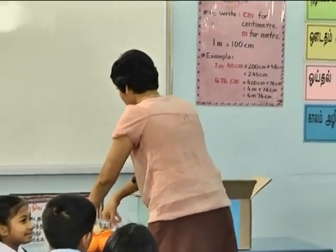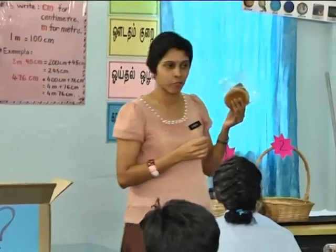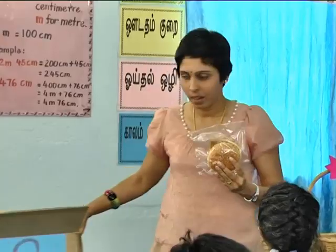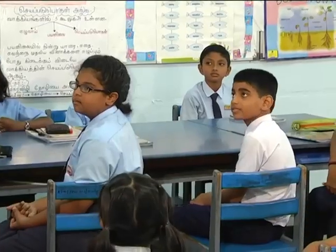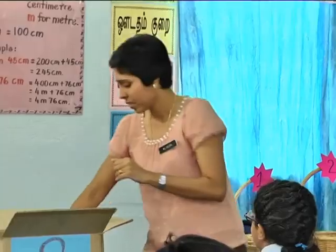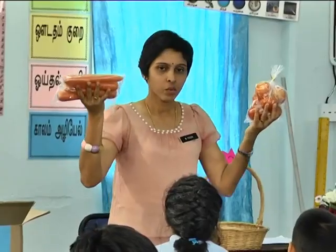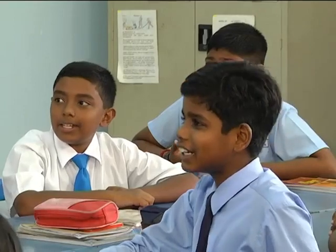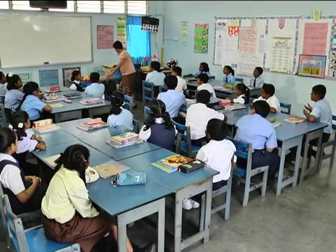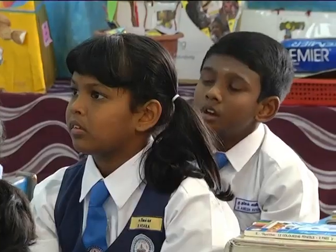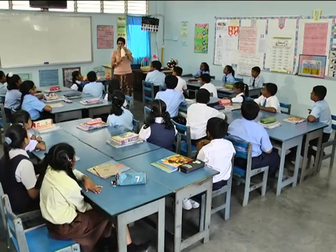Now, for these items, I want Pugal to answer. Pugal, where are you? Can you guess what I have for you today? It's a burger. Alright, that's good. For these items, I want these two groups to answer. Can you name these items? What are these? Carrots and tomatoes. For the final item, what do you see in my hands? A bottle of milk, teacher!